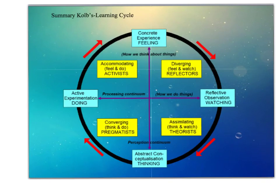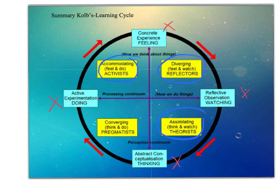To summarise Kolb's learning cycle, we've been through each of the stages. This is only petals level so we haven't gone too in depth, but think about the key areas: the concrete, the reflect, the abstract, and the active. We've also spoken about how these mix between the four key areas, and touched on how we think about things, how we do things — perception and processing. I will see you all in next week's lesson. Thank you very much. This is Kevin Hutchinson.